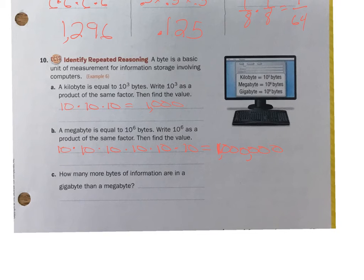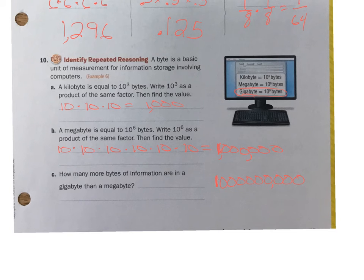How many more bytes of information are in a gigabyte than a megabyte? A gigabyte is 10 to the 9th — that's a 1 followed by 9 zeros, so a gigabyte is 1 billion. A megabyte, which we just figured out, is 10 to the 6th, so it's 1 million. We want to know how much more, so we have to subtract the megabyte from the gigabyte.